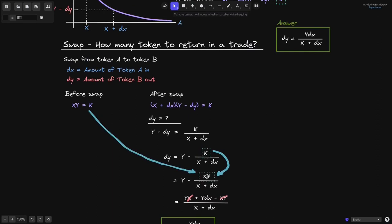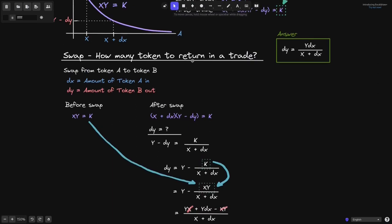This is our answer: dy equals y times dx over x plus dx — that is how many tokens to return in a trade when swapping from token A to token B. Running the same derivation in the opposite direction gives dx equals x times dy over y plus dy.